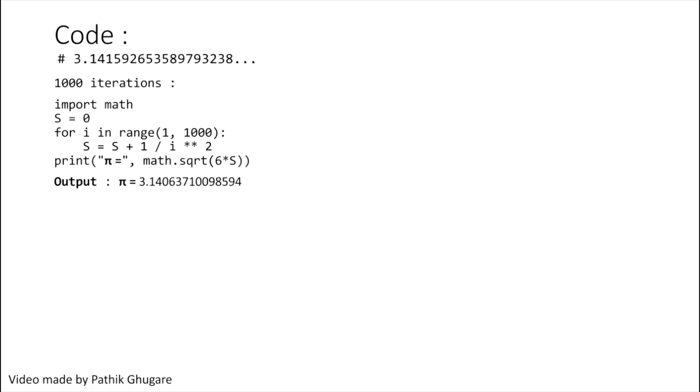As this for loop will get ended, we will print out this value of square root of 6 multiplied by S. For taking square root, I am using this square root function from math library in Python. So as you can see here, we have pi equals to 3.1440 and so on. So you can see that we are getting an approximate value till two decimal places for 1000 iterations.